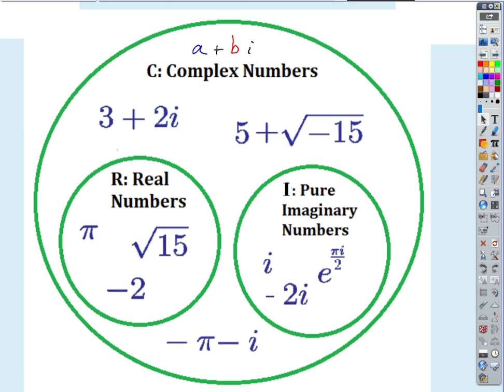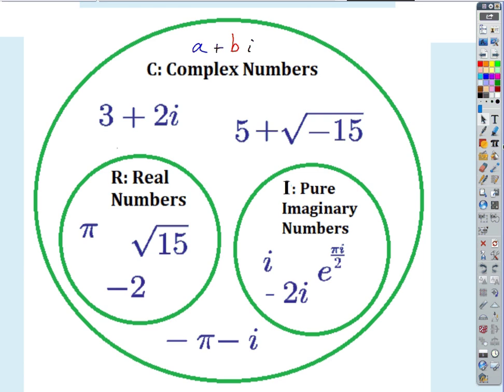What's significant about the set of real numbers when written as complex numbers? b is always zero — the imaginary part is always zero. The set of real numbers is the set of complex numbers where b equals zero. Pure imaginary numbers — like i, 2i, or pi times i — are numbers with no real part. Your typical complex number has both a real part and an imaginary part.